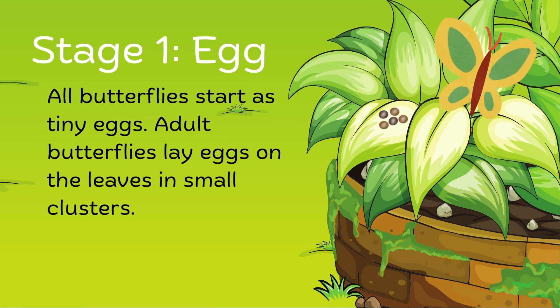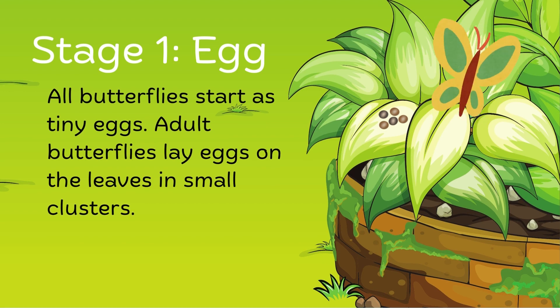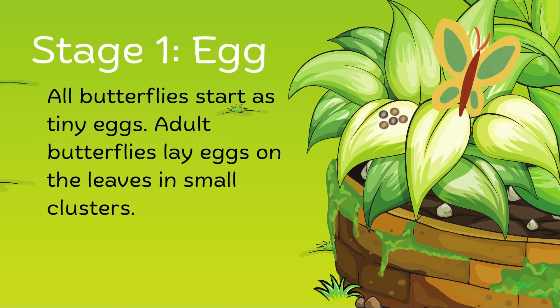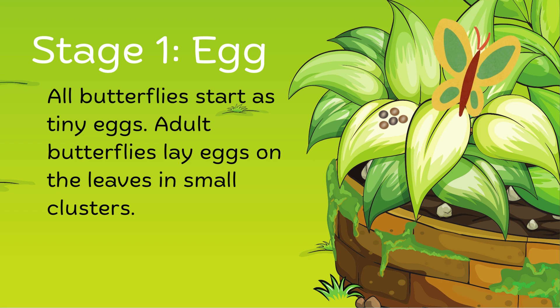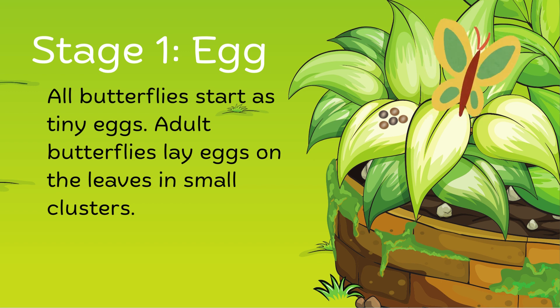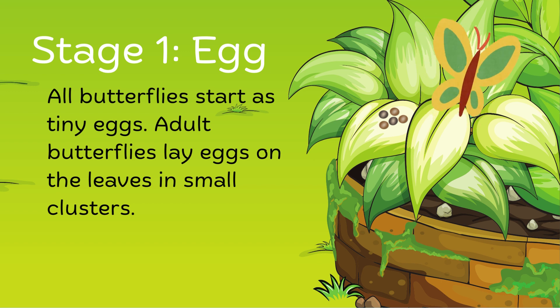The first stage is the egg. All butterflies start as tiny eggs. Adult butterflies lay eggs on the leaves in small clusters.